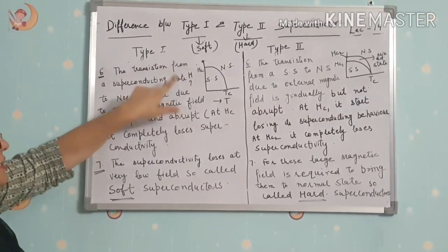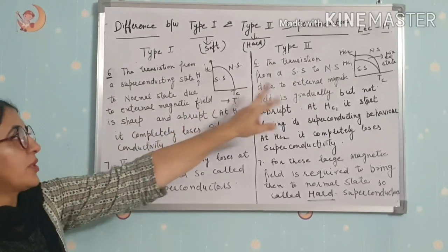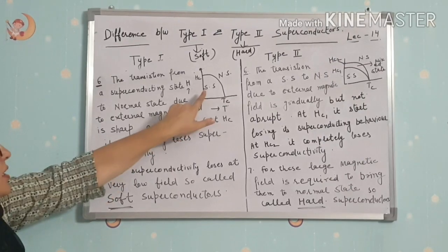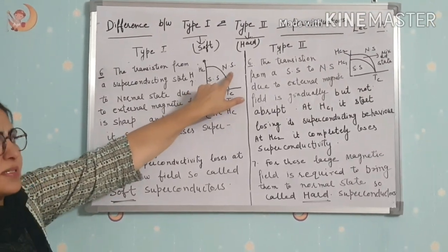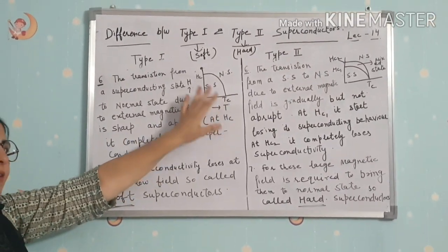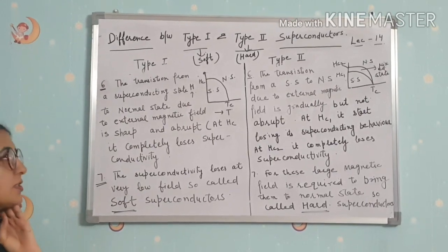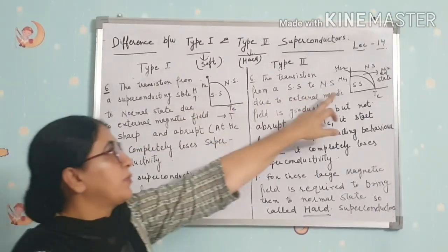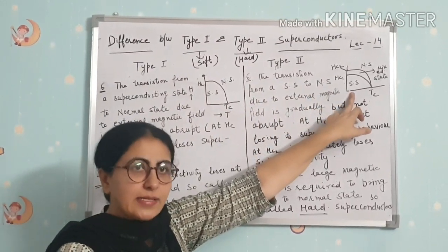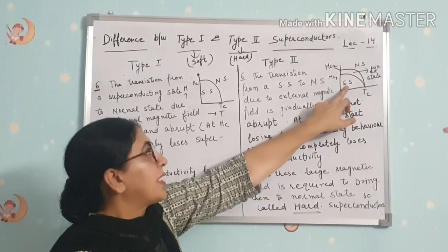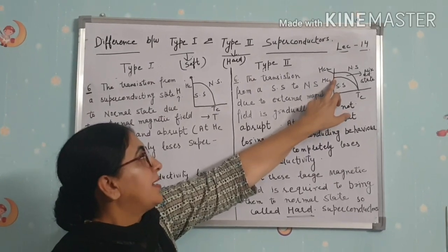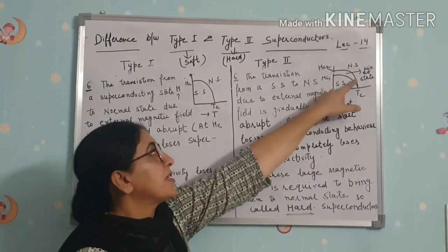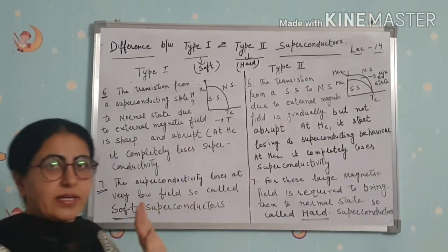Sixth difference: the H versus T graph. For Type 1, there is a single boundary between the superconducting state and normal state. For Type 2, there are three regions: superconducting below Hc1, a mixed state gap between Hc1 and Hc2, and normal state above Hc2.